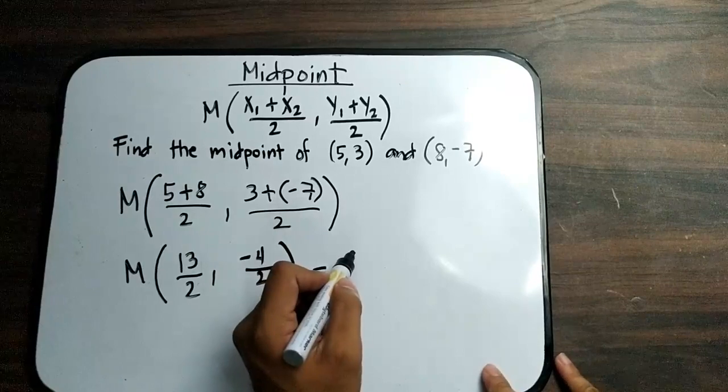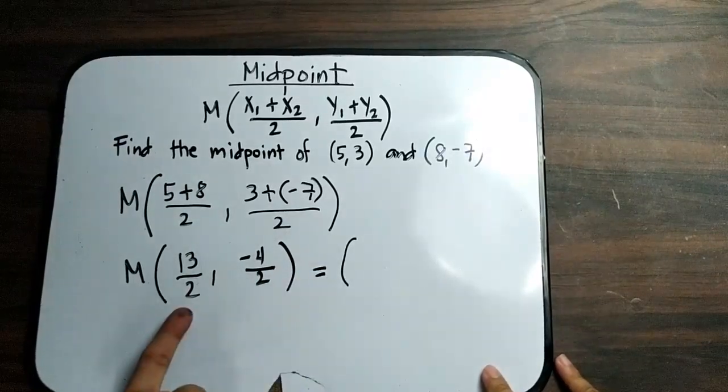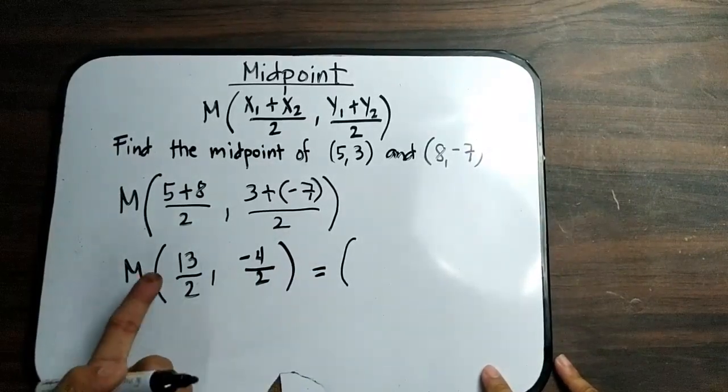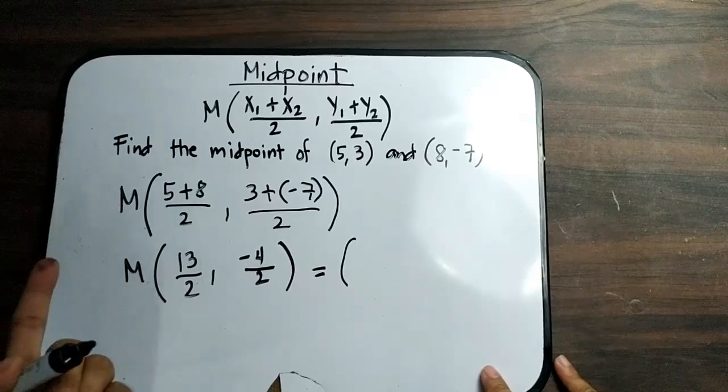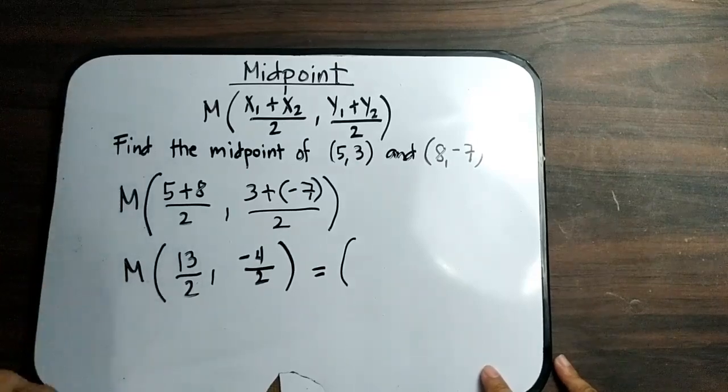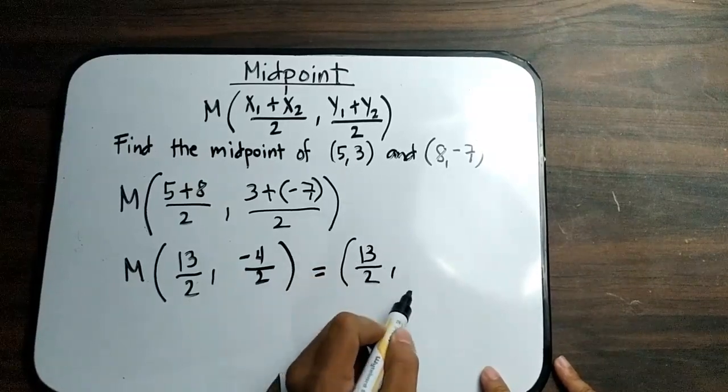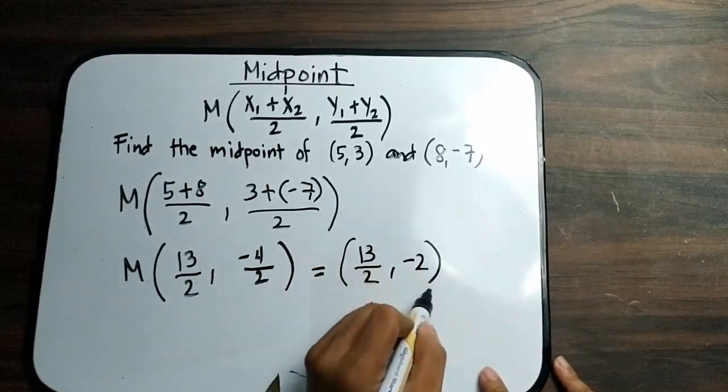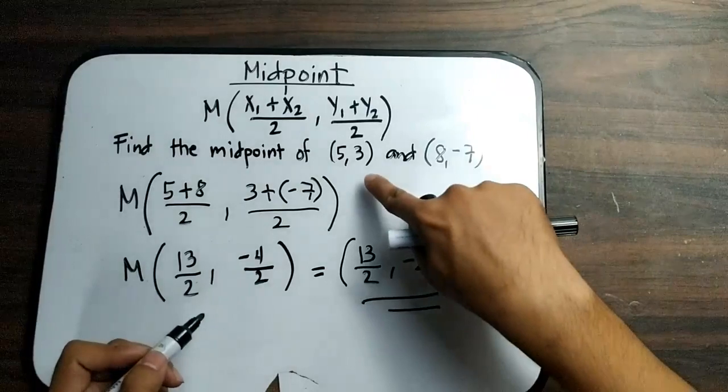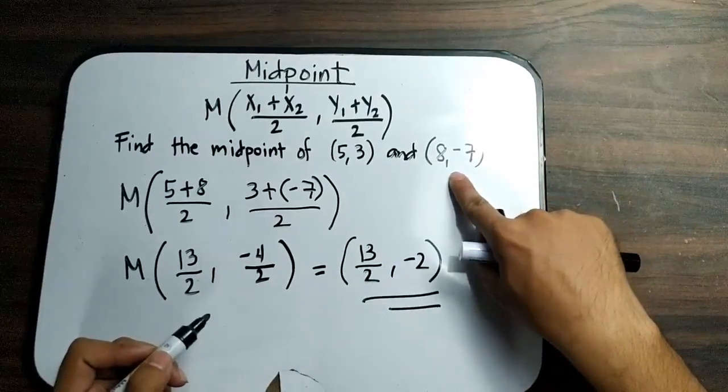By the way, we can express 13 all over 2 as fraction or decimal. This time, I will use the fractional form. So we have 13 over 2, negative 2. This is the midpoint of (5,3) and (8,-7).